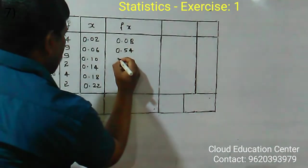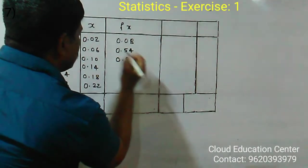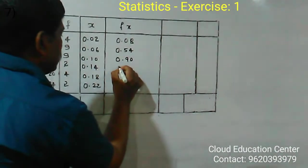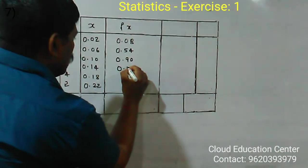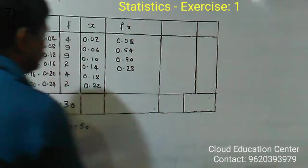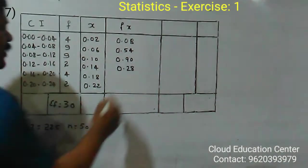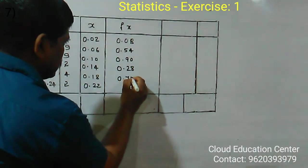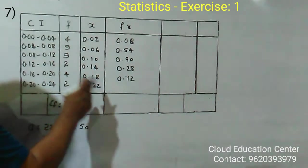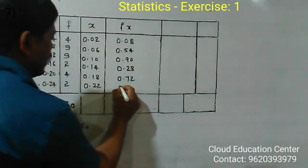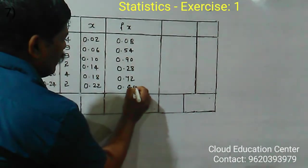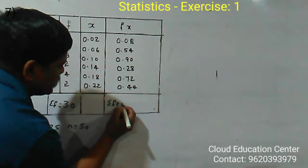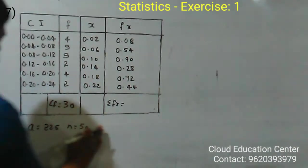2 times 0.14 equals 0.28, and 4 times 0.18 equals 0.72, and 2 times 0.22 equals 0.44. Now we calculate sigma FX by adding all these values.